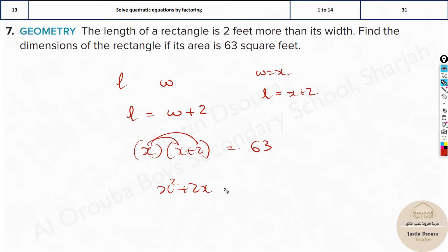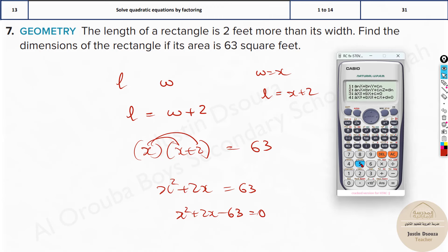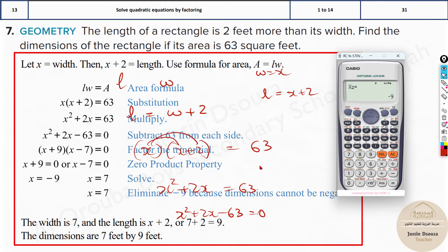Now multiply using distributive property. It will be x squared plus 2x equals 63. Bring this to the other side: x squared plus 2x minus 63 equals 0. Now put this in the calculator. We go to mode 5 and 3 and type the coefficients: 1, 2, and minus 63. The answers are 7 and minus 9.